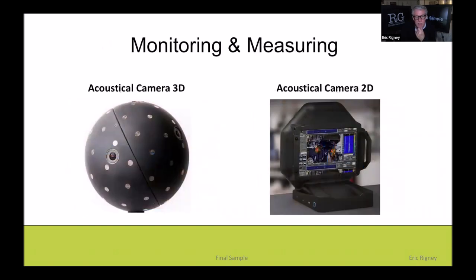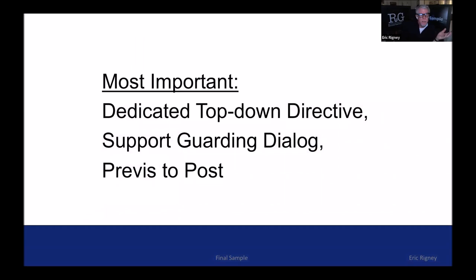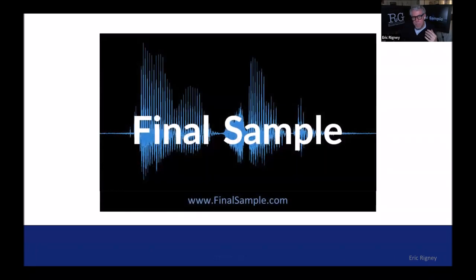I see AI-isolated tracks per actor as the future. The monitoring devices — the 3D and 2D acoustic camera options — are a great way to survey a stage to find noise generators, pop a balloon, find where sound bounces from the actor's perspective, and mitigate by moving set pieces or placing absorptive material. The most important ways to mitigate sound are: a top-down directive, supporting and guarding the dialogue, and carrying that through from pre-vis to post.